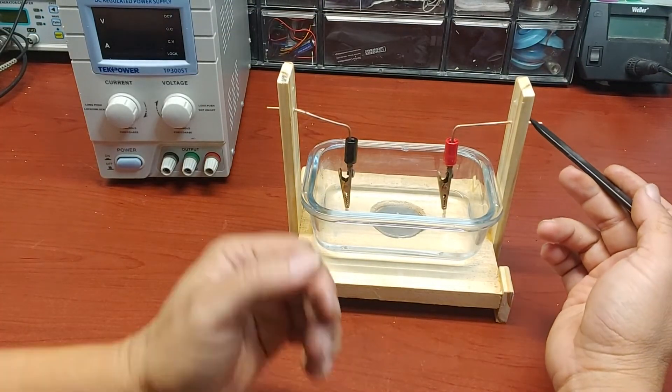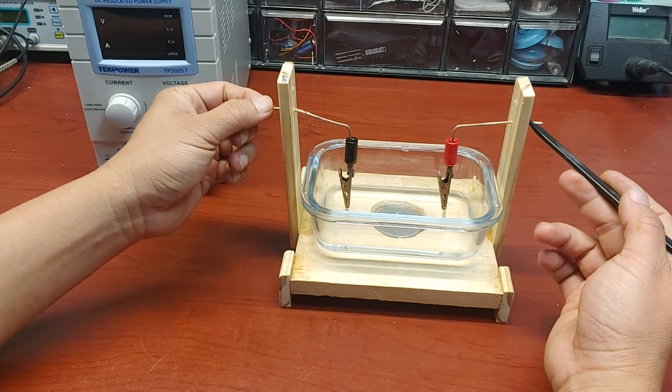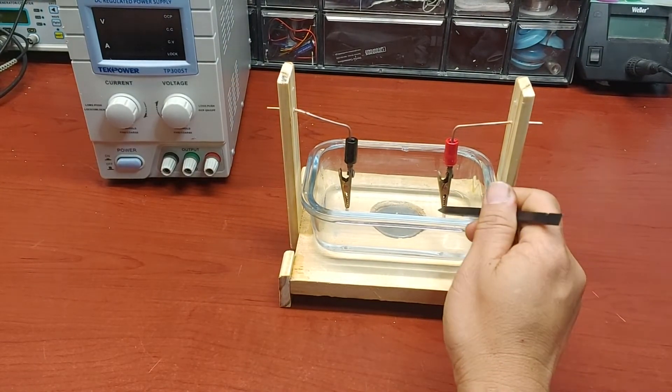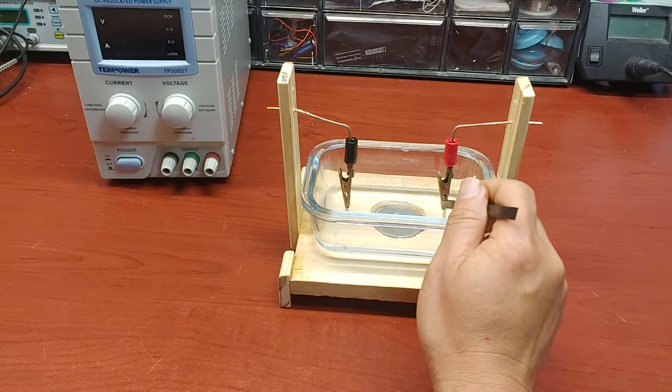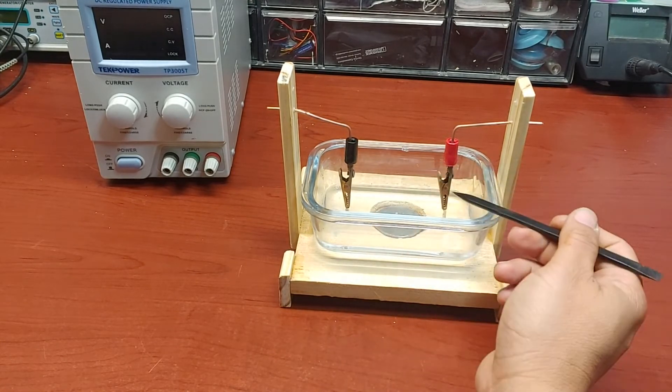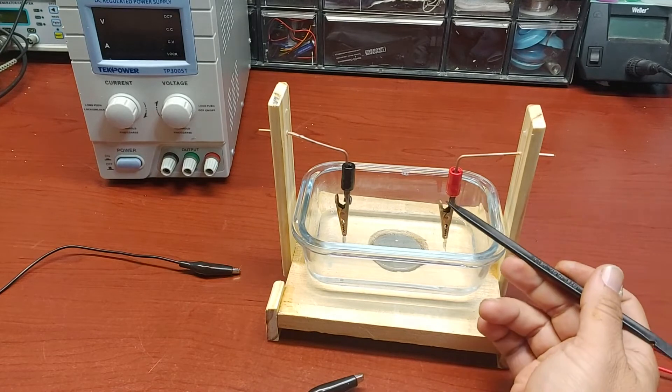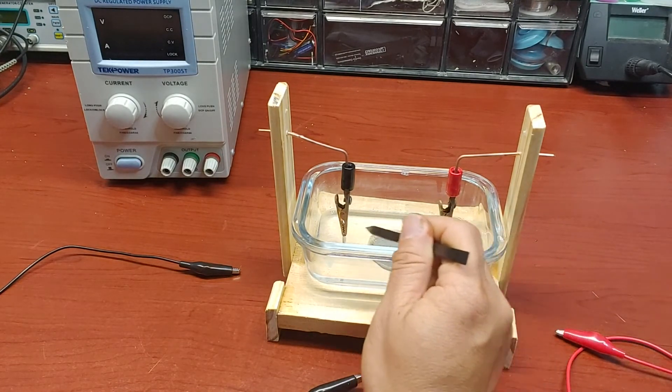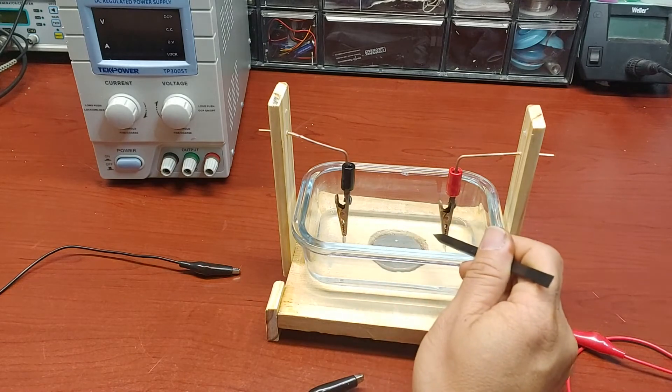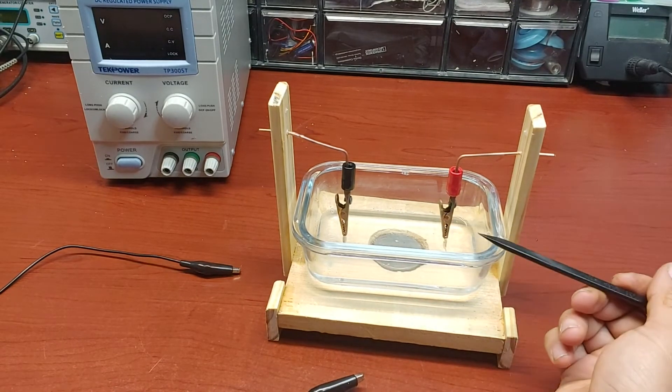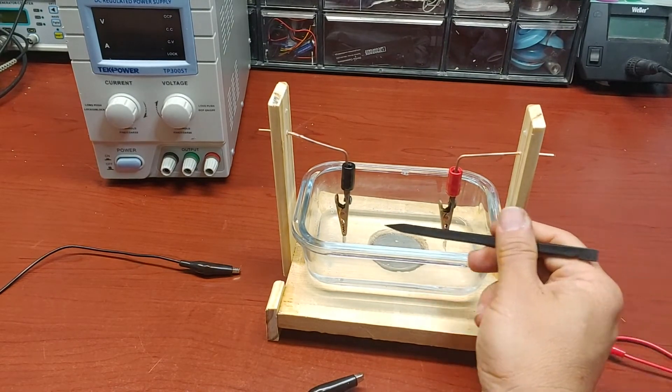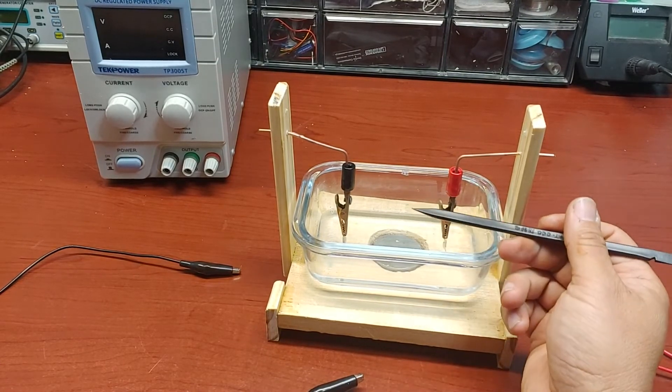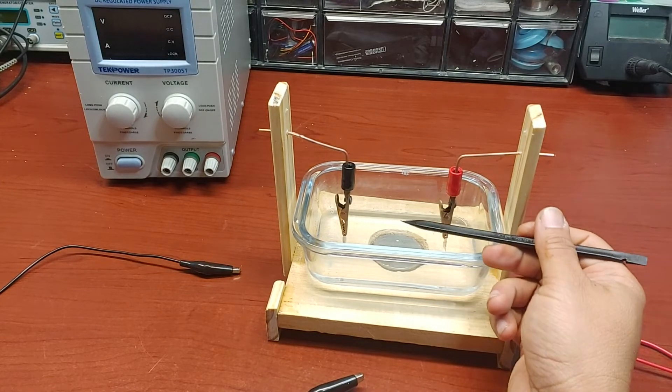Now, when we apply the voltage on the two terminals, there will be electric current flow between the two electrodes in the water, establishing a virtual conductor. And when electric current flows through this virtual conductor, it will generate an electromagnetic field.